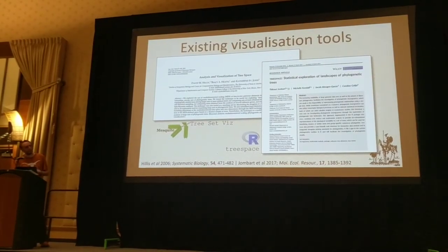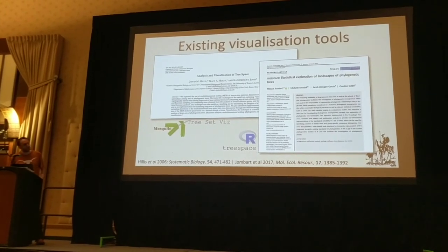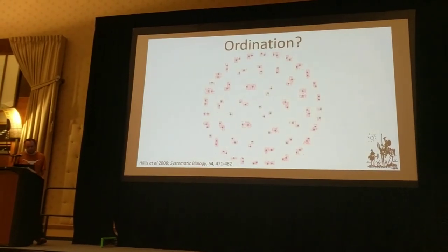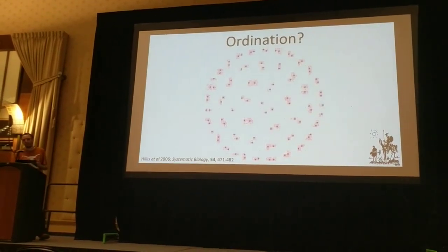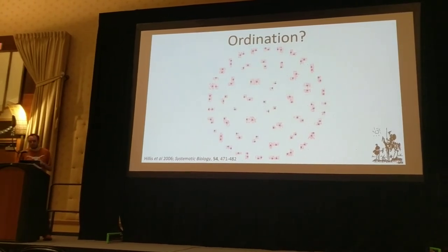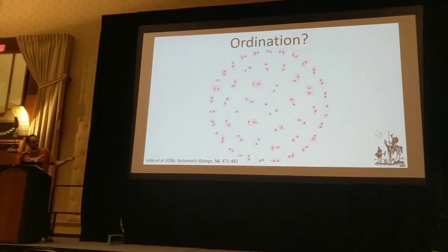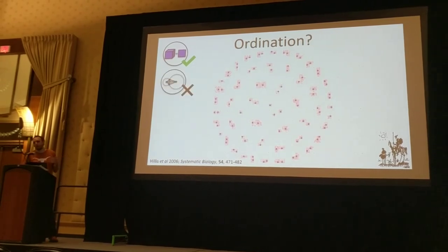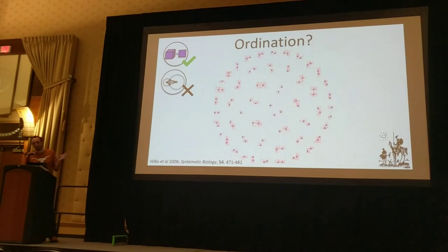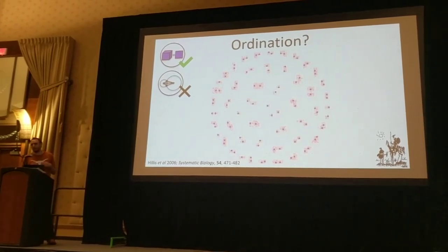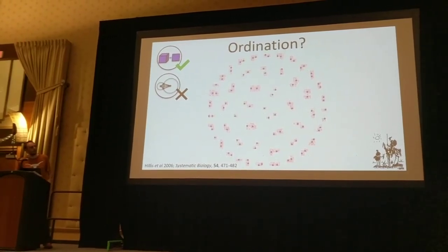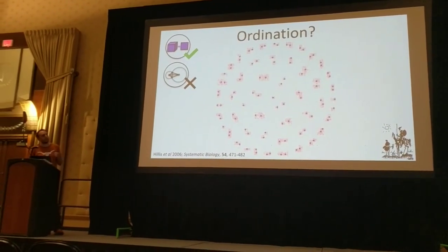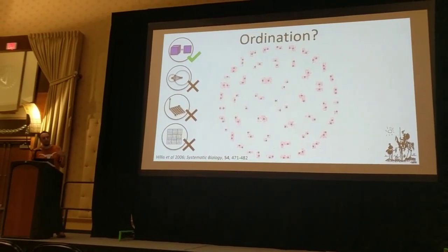There are already nice existing tools that do this — these are what you probably should use instead of what I'm trying to do. There's the treespace module in ape/phangorn, and for example the treespace package. The normal way people do tree spaces is using something like classical multidimensional scaling, which is just a form of ordination. But there are problems: this space does well in terms of dimensionality but badly in terms of Euclidean nature. All pairs of points are exactly as far away from each other as they are from the centre of the space. Also with ordination, every time you add or subtract a tree, you have to re-perform the ordination, changing the relative and absolute positions of all those points.